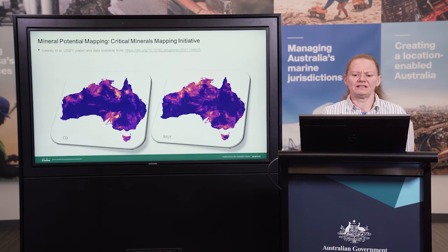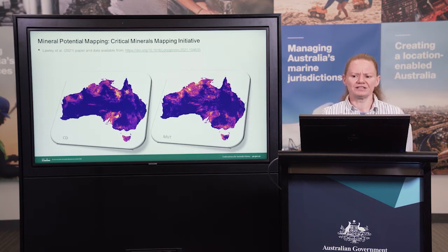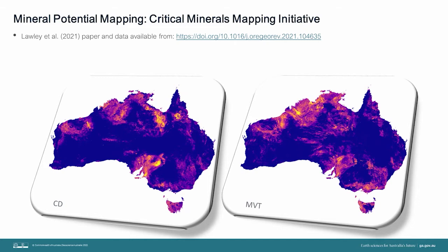The Critical Minerals Mapping Initiative is a collaboration between Geoscience Australia, the United States Geological Survey and the Geological Survey of Canada. As part of this initiative, continental-scale mineral potential maps for clastic-dominated zinc-lead and Mississippi Valley type mineral systems were generated using both statistical and machine learning based approaches. These systems are known to have potential for critical minerals as a by-product or co-product, including germanium and cadmium.